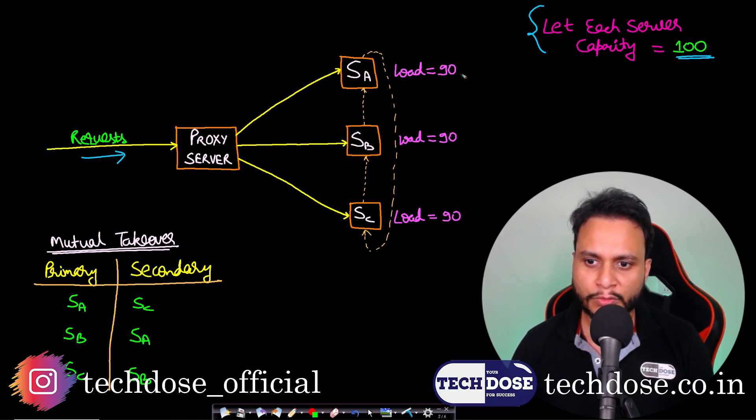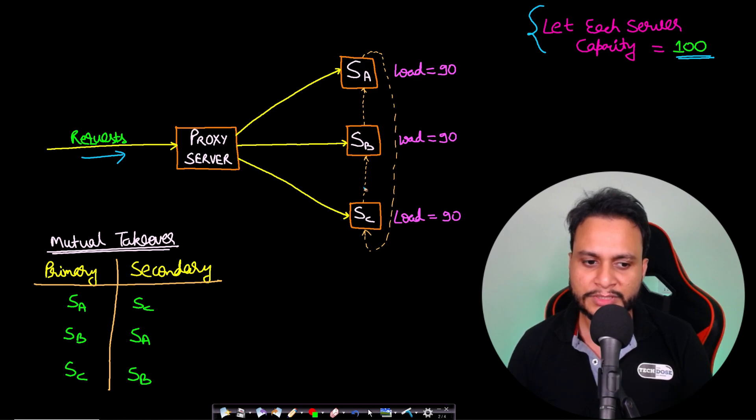Let's assume that each of the servers capacity is equal to 100, and currently they all are running at a load equal to 90. Now let's say that you want to consider the case of a failover. That means if a server crashes, then you want to assign its request to be served by a secondary server, that is a backup server.